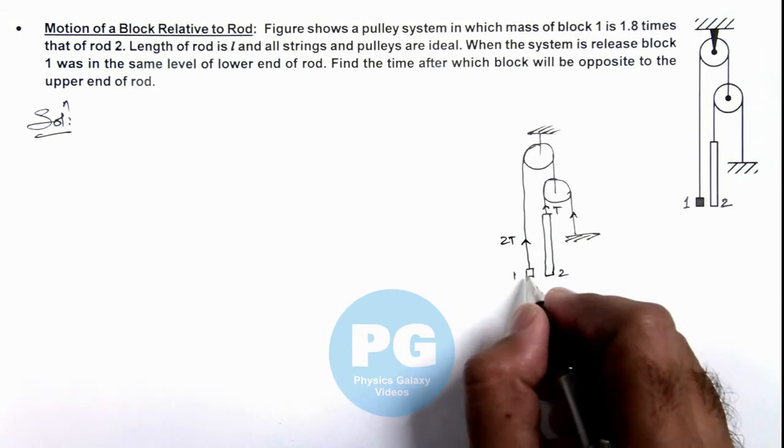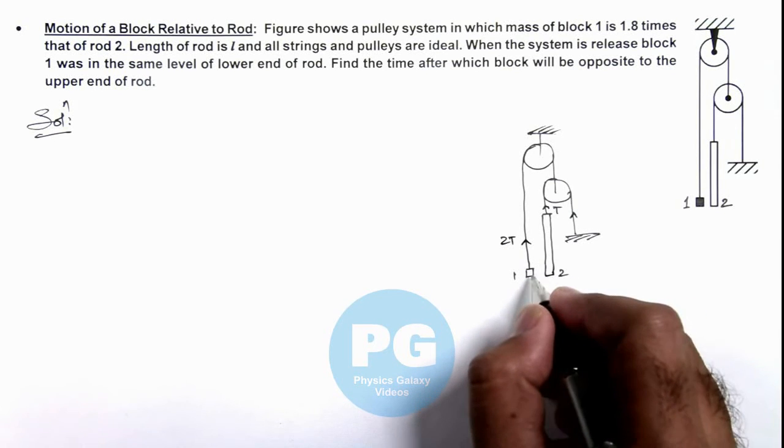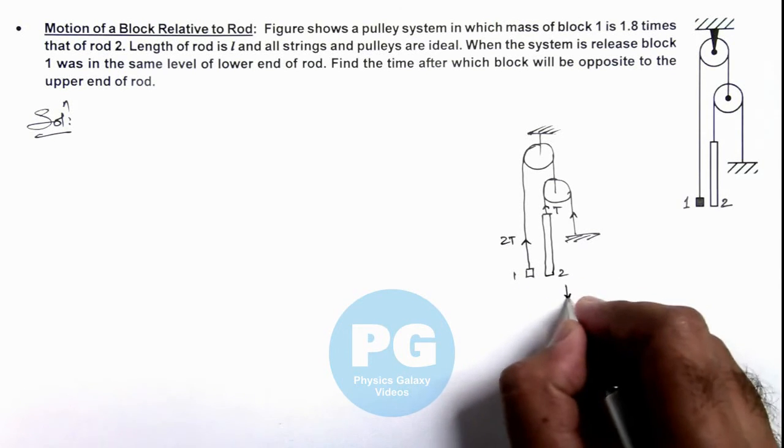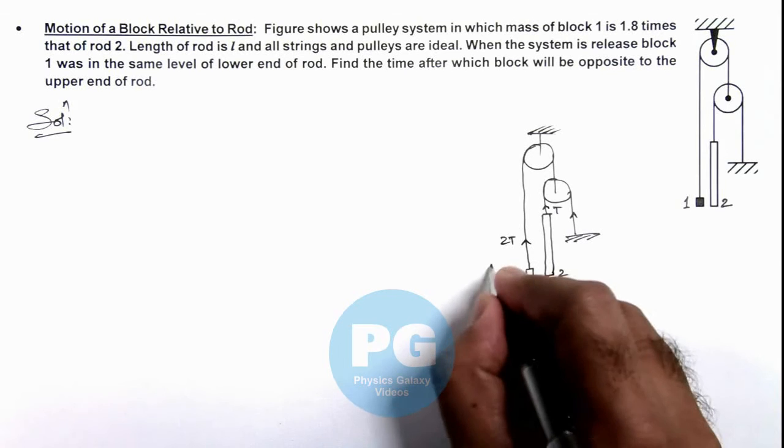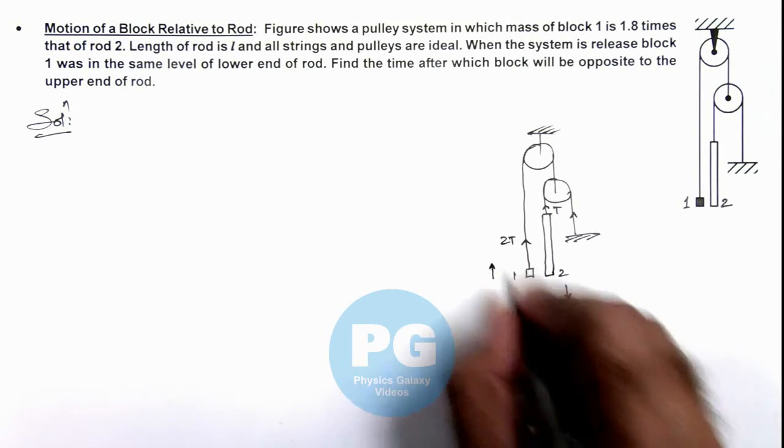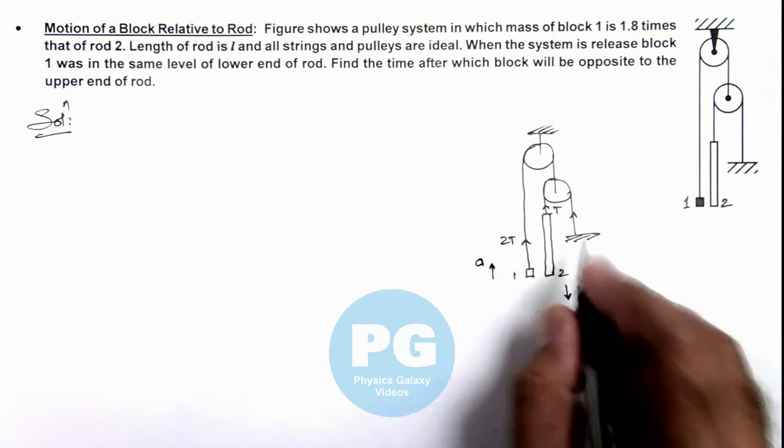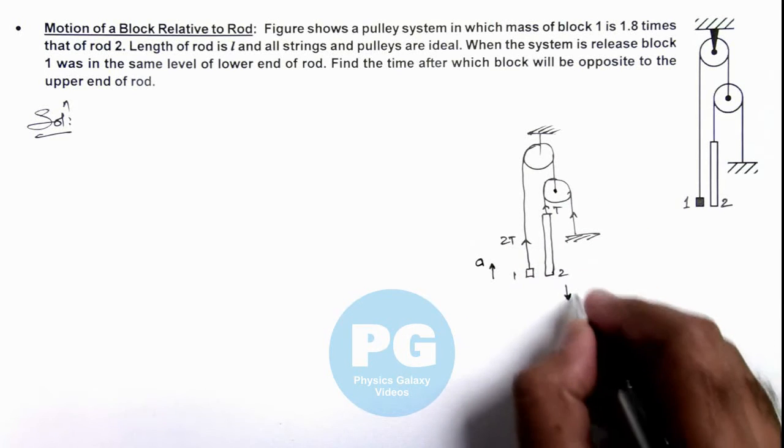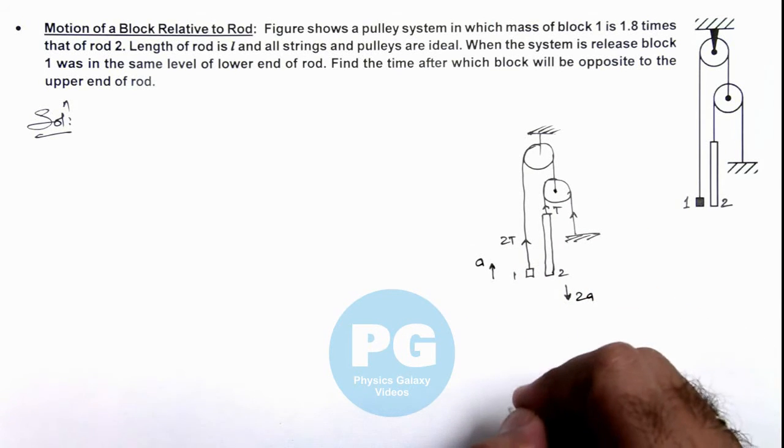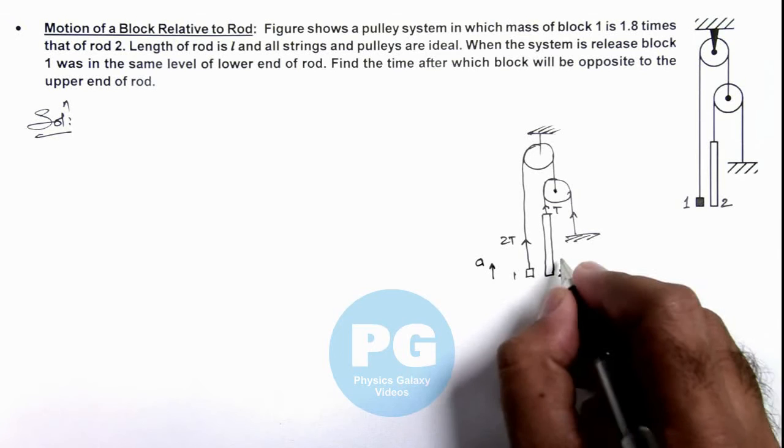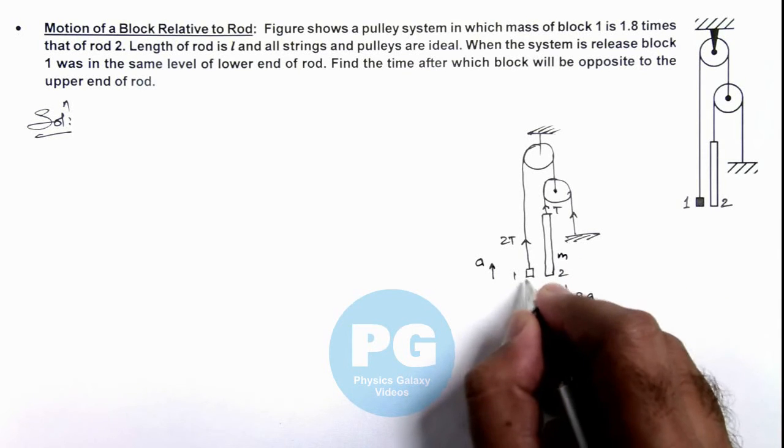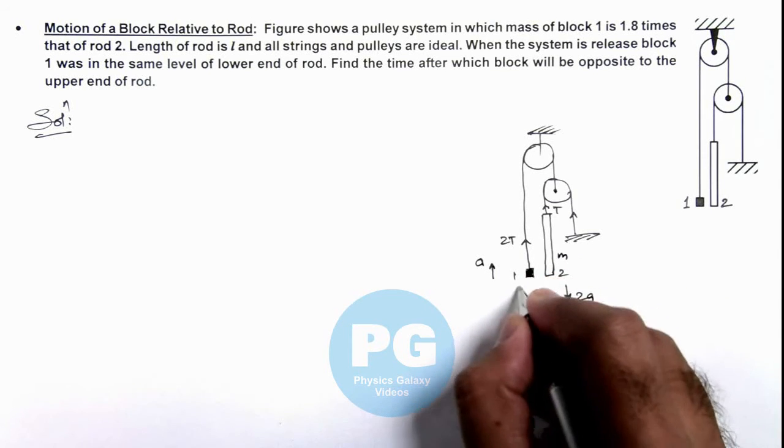And mass of 1 is less than twice the mass of 2, that means if 2 is going down, 1 will be going up. If 1 is going up with an acceleration a, then by constrained relation here we can see 2 will come down with acceleration 2a. And if we consider mass of this rod is m, then the mass of this block 1 can be taken as 1.8m.